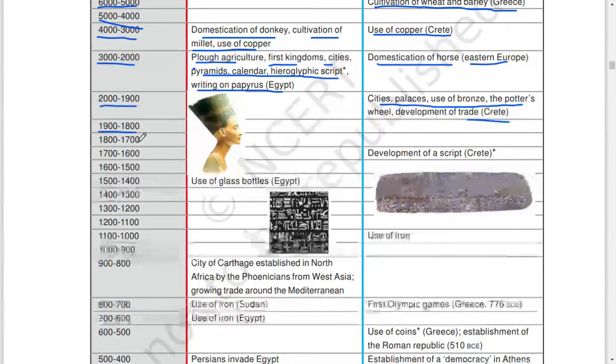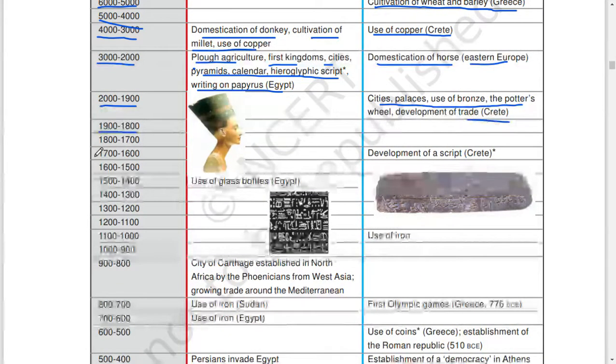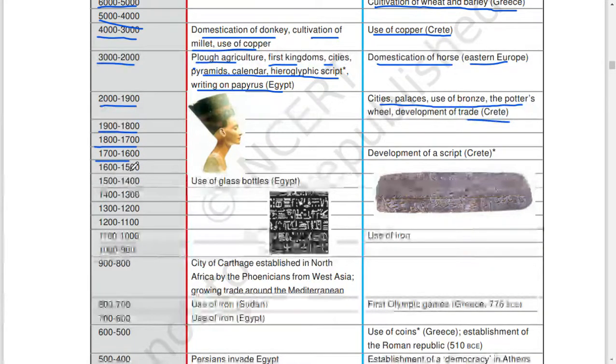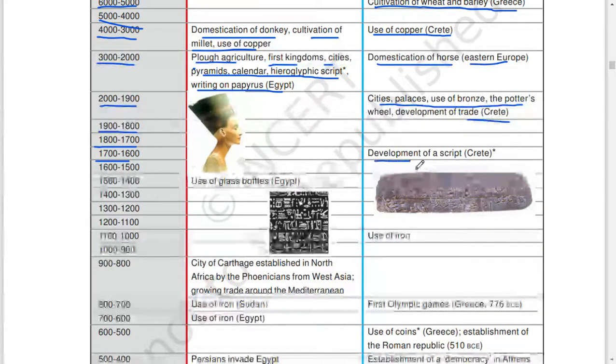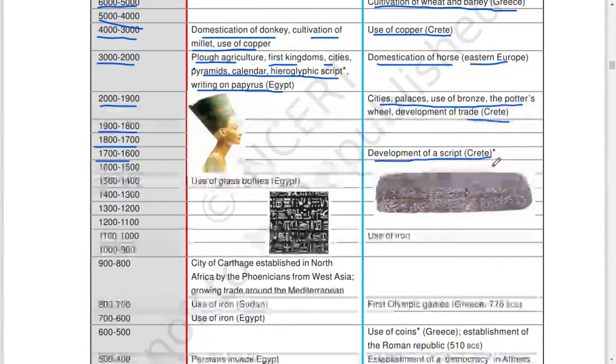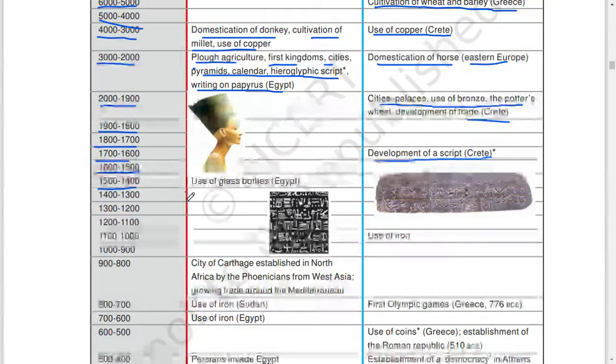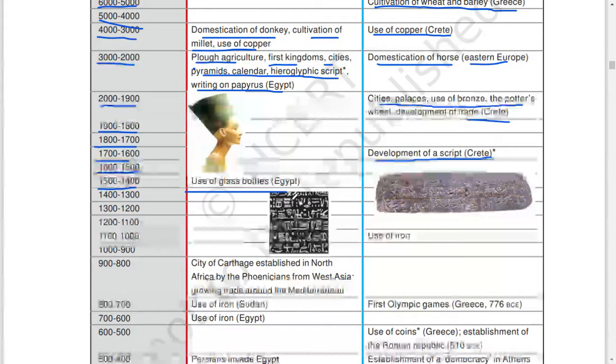2000 to 1900: cities, palaces, use of bronze, potter's wheel, development of trade, Linear script, Crete. 1900 to 1800, 1800 to 1700, 1700 to 1600: development of script, Crete.